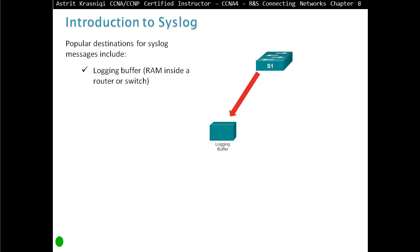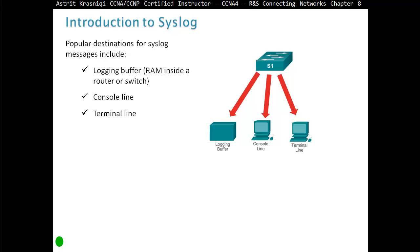Popular destinations for Syslog messages include the log buffer in RAM, inside the router or switch, and the console line, which is the default. So if you configure any router or switch — for example, once you enable an interface — you see a message; that is the Syslog message. By default you're going to see all the messages on the console line. We can also send them to a terminal line, so if we are connected through Telnet or SSH, we can enable Syslog messages to appear there. However, if you are connected via Telnet and bring up an interface, you will not see a Syslog message, because Syslog messages are not enabled by default on terminal lines — they are only enabled on the console line.